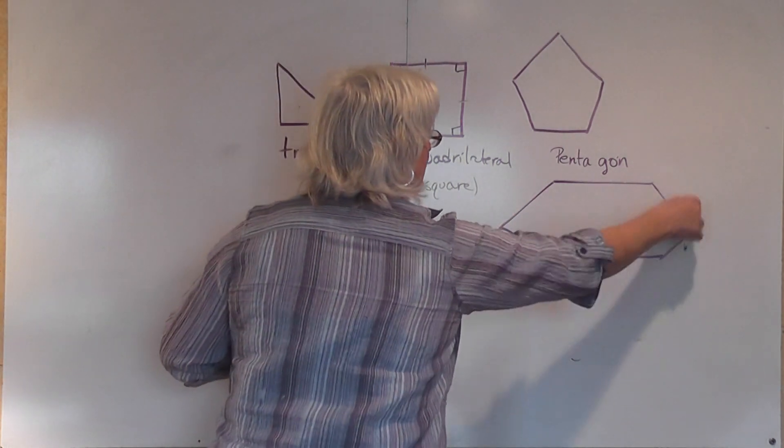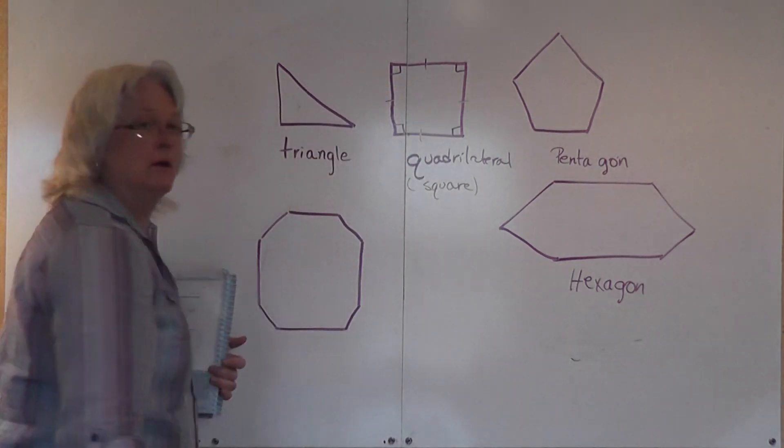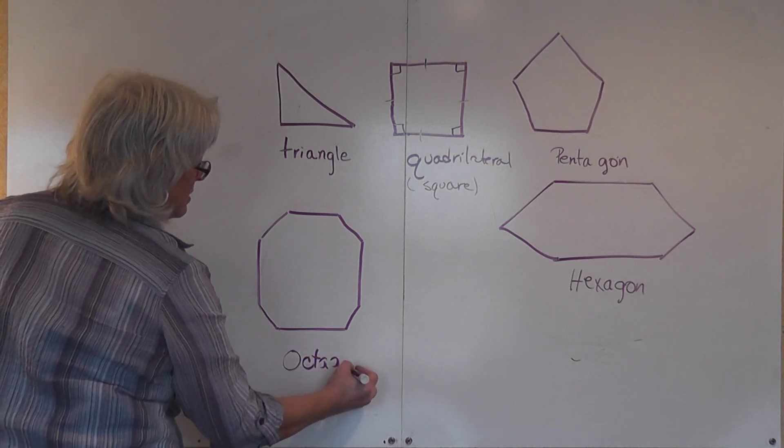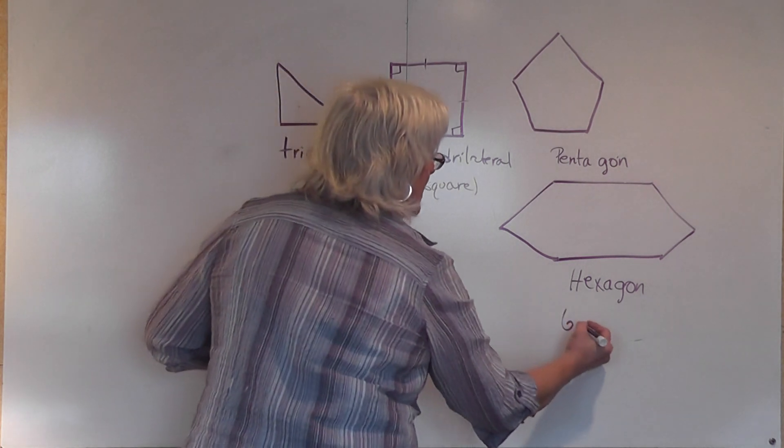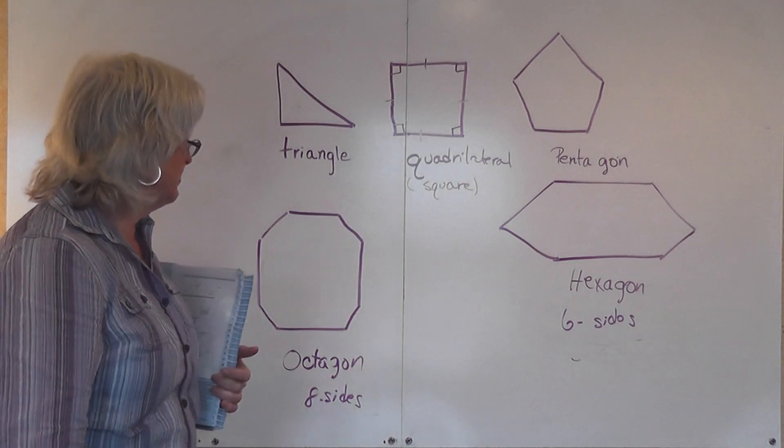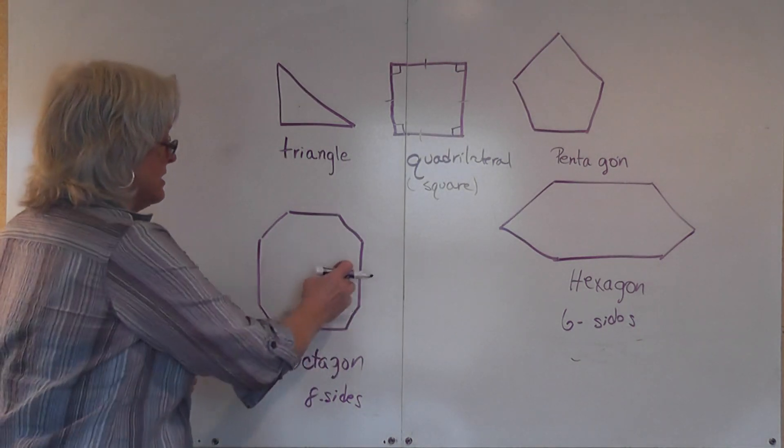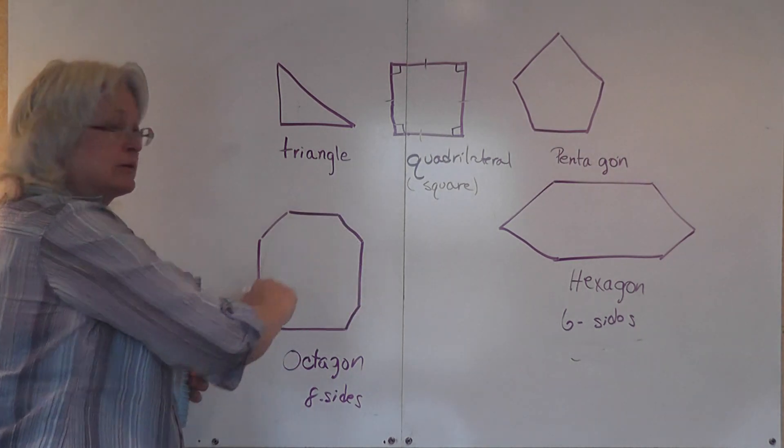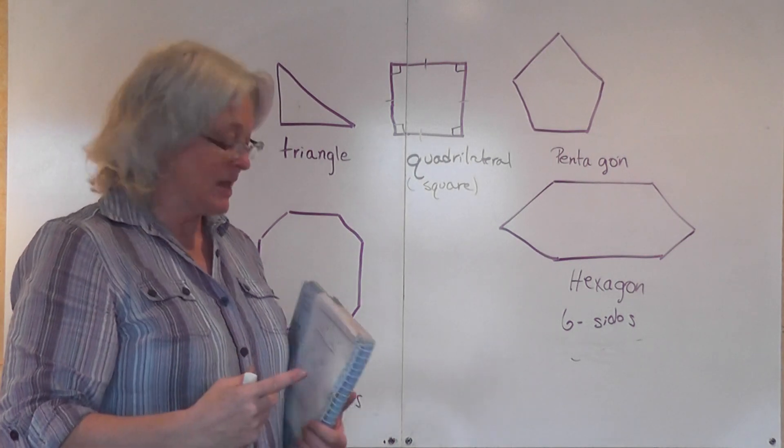Now we have a pentagon. A pentagon has how many sides? Penta is five. So a pentagon is a five-sided object. A hexagon—one, two, three, four, five, six—is a six-sided object. We also have an octagon, which is eight sides. What is our most easily recognizable eight-sided figure? If you live in the United States, that's going to be a stop sign.